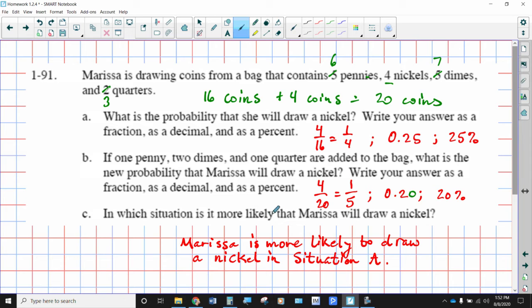In which situation is Marissa more likely to draw a nickel? When you had fewer coins, you had a 25% chance of drawing a nickel. When you had more coins, you had a lower percentage. So situation A is the one where she has the higher probability. She's more likely to draw a nickel with only 16 coins in the bag as opposed to 20.